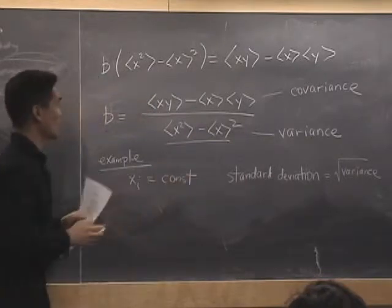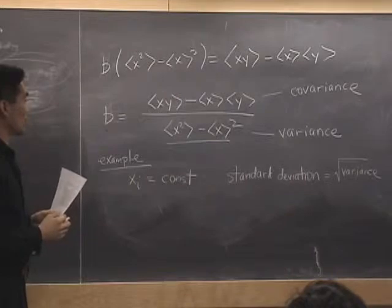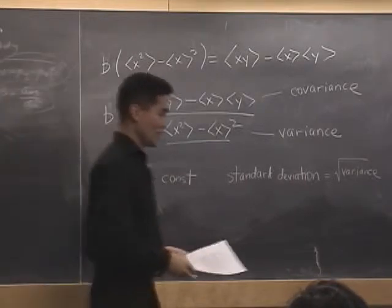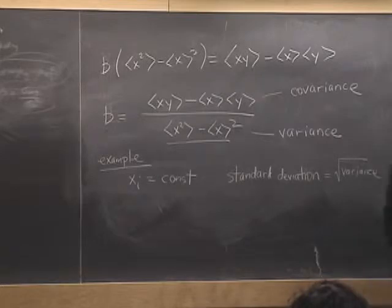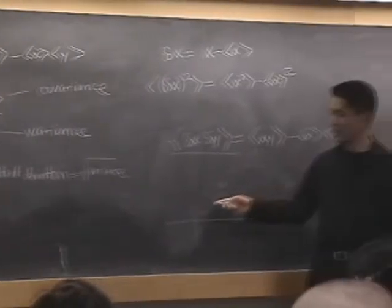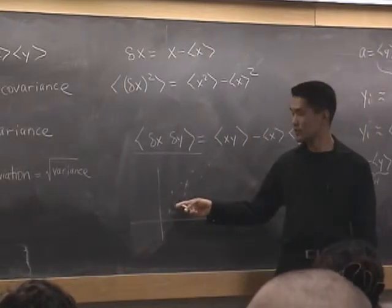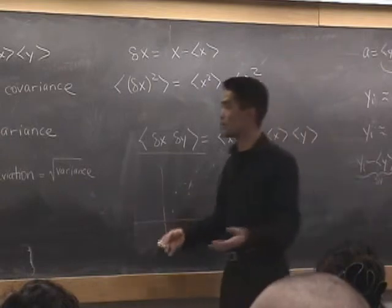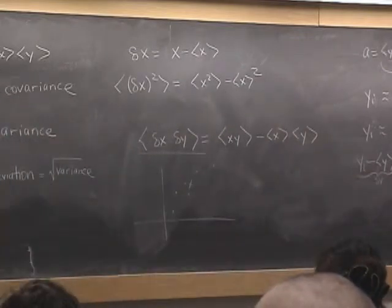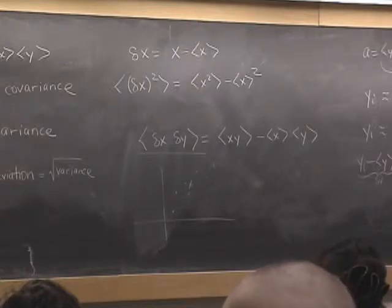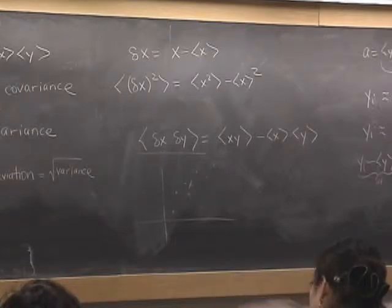You could think about that as a kind of normalization, right? Suppose I took this picture and I just doubled every dimension. If everything got expanded by a factor of 2, we wouldn't want the slope of the best fit line to change. The slope should be the same. But we know that the top, if we expand everything by a factor of 2, the top will go up by a factor of 4. And the bottom will also go up by a factor of 4, so that compensates.